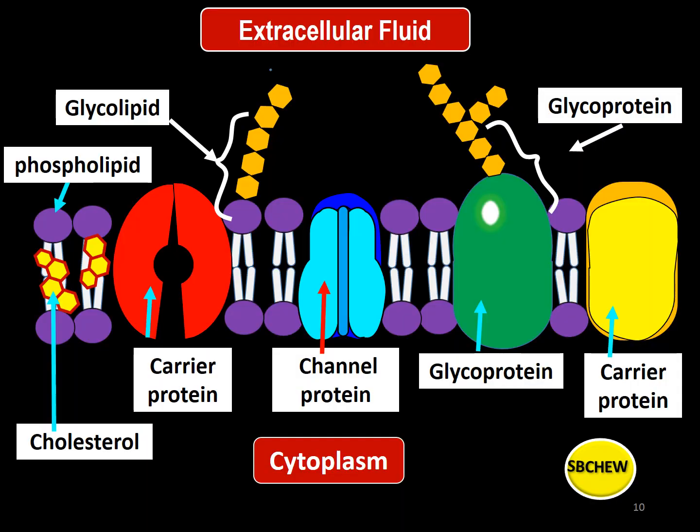We have finished studying the four main components of the plasma membrane: the phospholipid molecules, the protein molecules, the glycolipids, the glycoproteins, and the cholesterol. We must be able to identify these structures in a given diagram, be able to spell their names, and also be able to state the functions and structure of the various components of the plasma membrane.